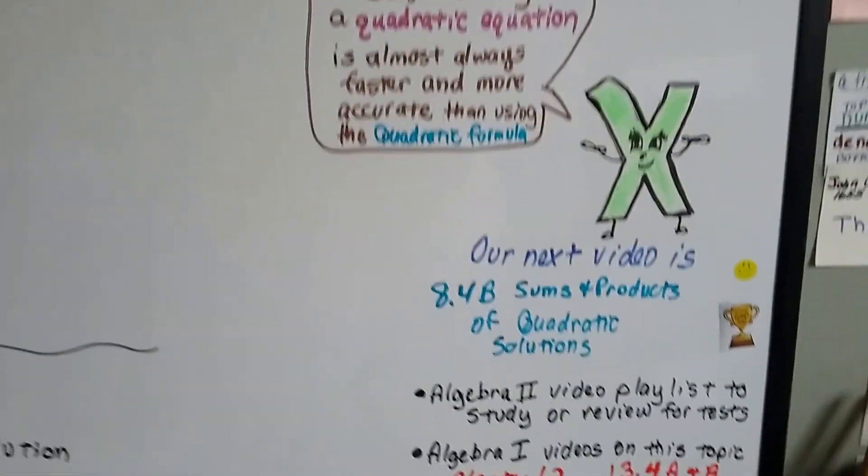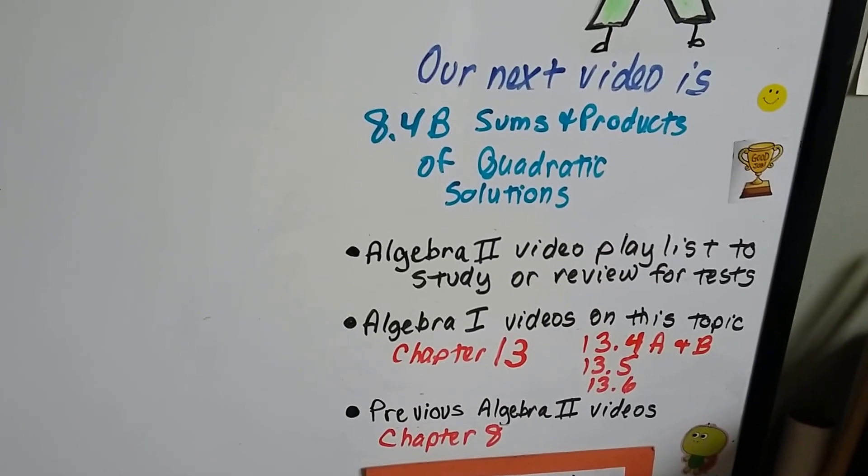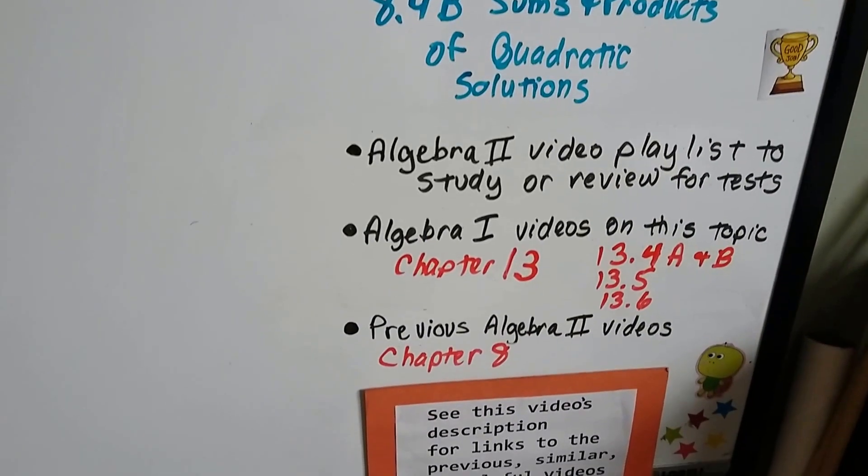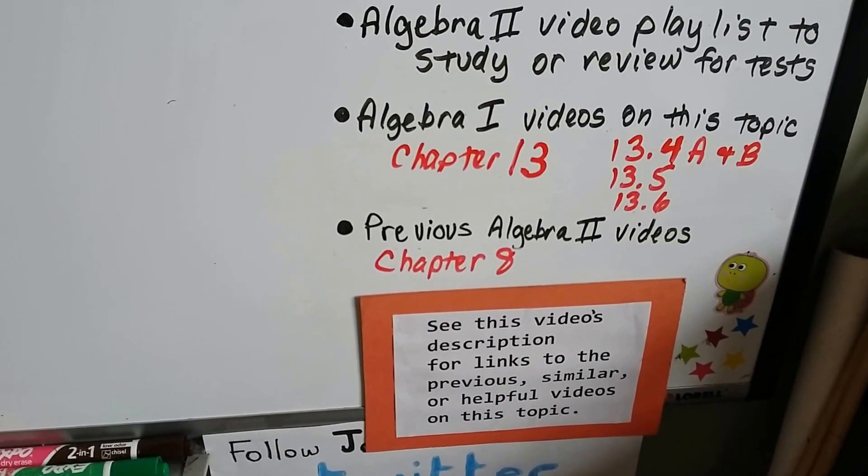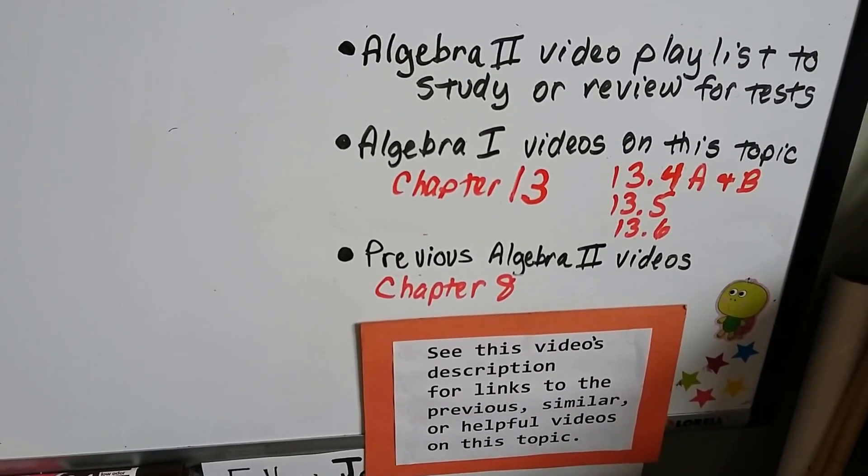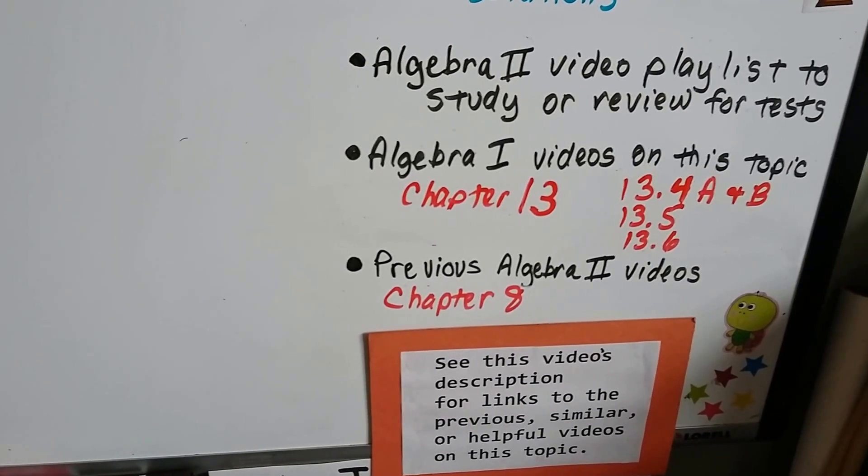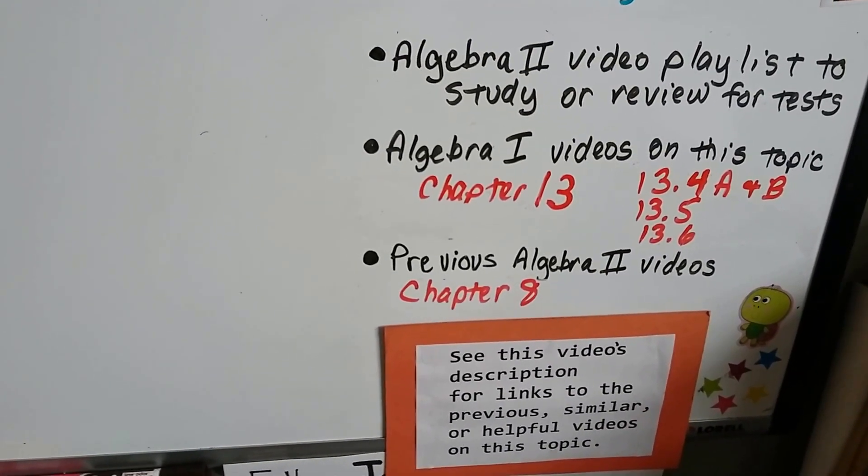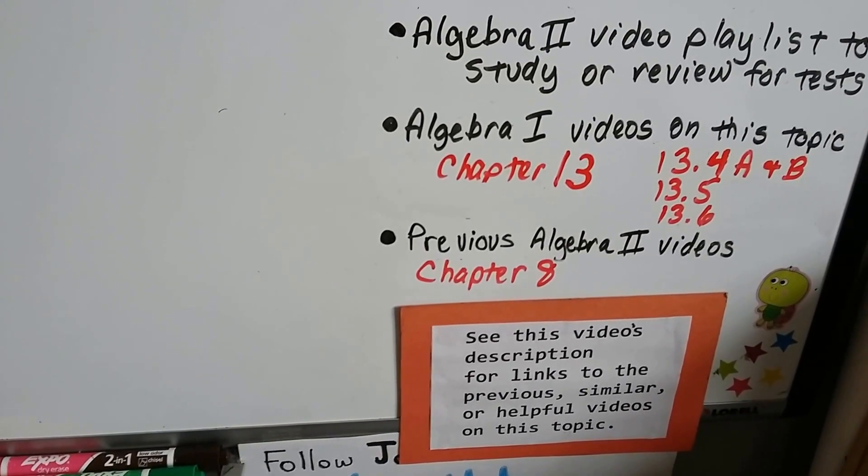Alright, our next video is going to be 8.4b. We're going to talk about the sums and products of quadratic equation solutions. I'm going to add this video to the Algebra 2 playlist. And back last year in Algebra 1, if that's where you're at and you're just following along here with Algebra 2, which is fine. Chapter 13 had 13.4a, which talked about the quadratic formula. And 13.4b talked about the discriminant. And then 13.5 and 13.6 talked about using them and the quadratic equations to solve.